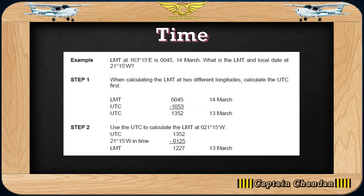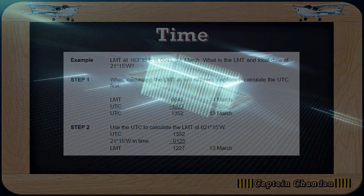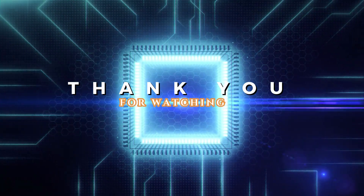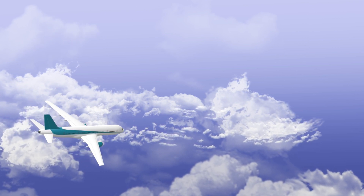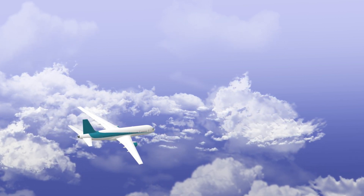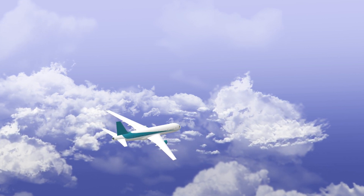For example, if LMT is given on the 14th of March, you can find the LMT on another meridian using the terms: longitude East — UTC least; longitude West — UTC best. Keep in mind that when you cross the anti-meridian, the date will change. Thank you for watching — this was the last video for the general navigation training series for CPL and ATPL. Next, we start radio navigation.